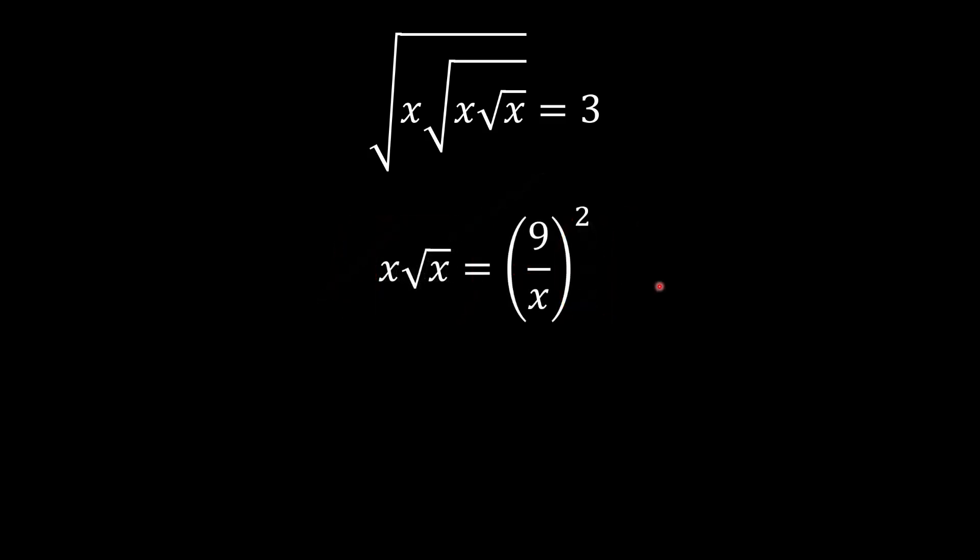And now we're left with this. Now we've got to distribute the power of 2 inside, so we could have 81 and x squared. As you can see.